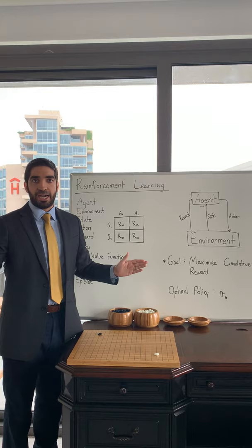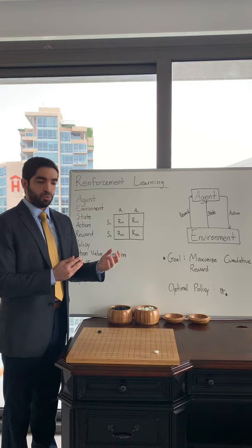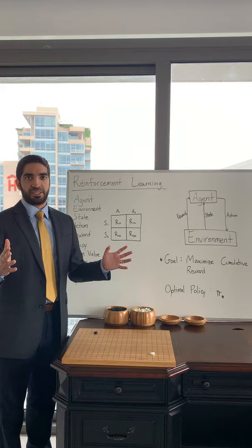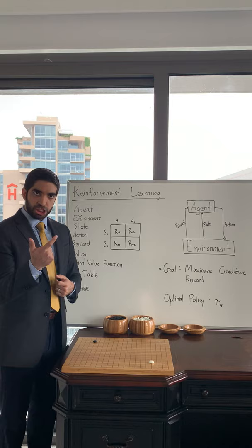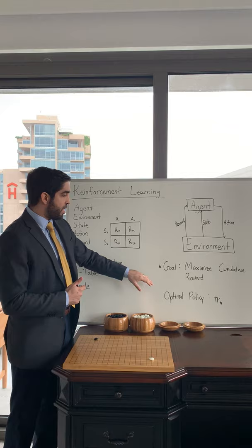You can have episodic tasks, which have a beginning and an end — what we call a terminal state, an end state — or continuing tasks that never end; they go to infinity. The goal is to maximize the reward, and what we're really looking for is the set of actions corresponding to the states that yield the maximum reward. And that we call the optimal policy.